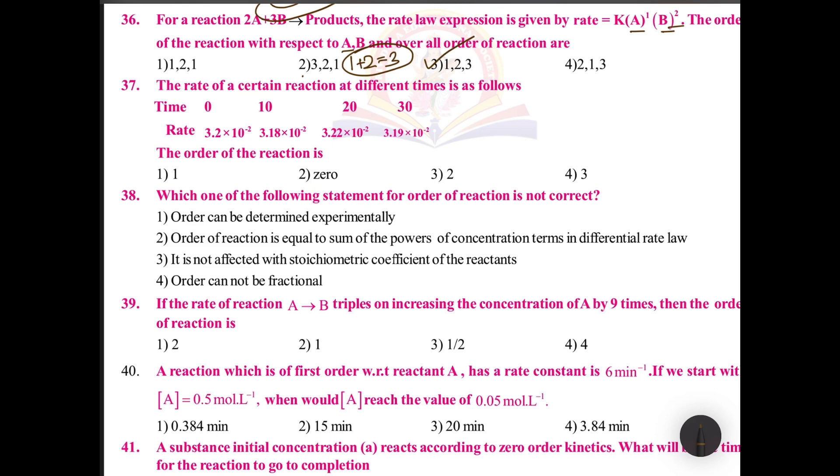The rate of a reaction at certain times is as follows. Time is given here: at 0, at 10, at 20, at 30. You see at 0 the rate is equals to 10, at 20 seconds, at 30 seconds, rate is not changing. When there is no change with the time in the rate, that is zero order reaction.